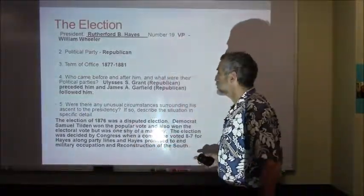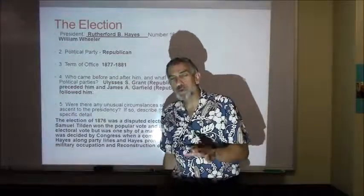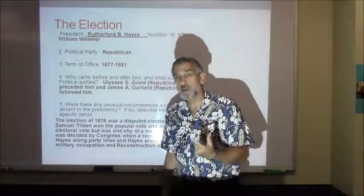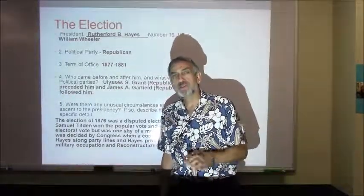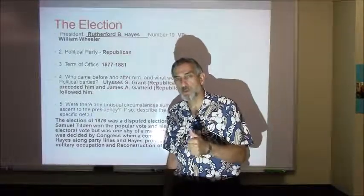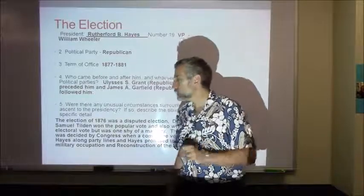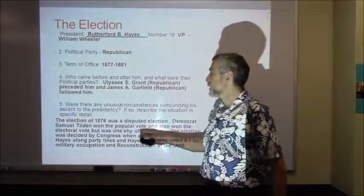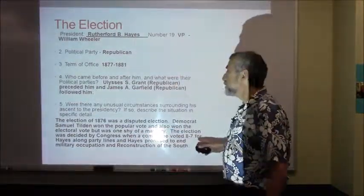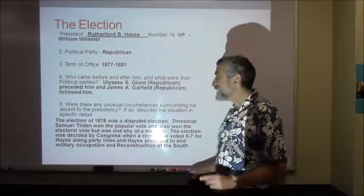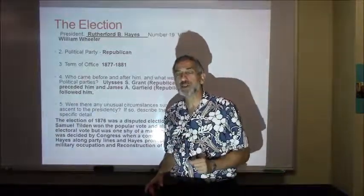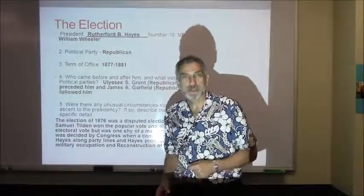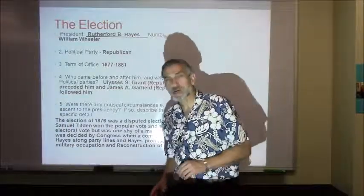Any unusual circumstances about his ascent to the presidency? This was a tough one. We have the election of 1876 and two popular candidates: Rutherford B. Hayes and Samuel Tilden. The election was decided by Congress. Democrat Samuel Tilden won the popular vote and also won the electoral vote, but was one shy of a majority. A congressional committee voted eight to seven — just one vote — to give the election to Hayes. Hayes, in turn, promised to end Reconstruction. It's called the Compromise of 1877.